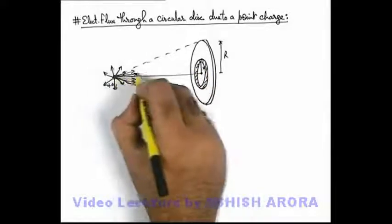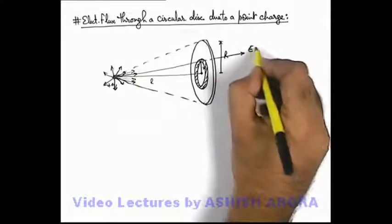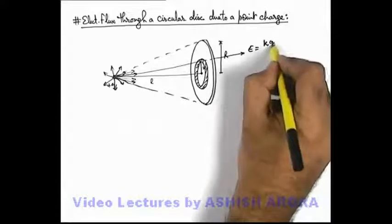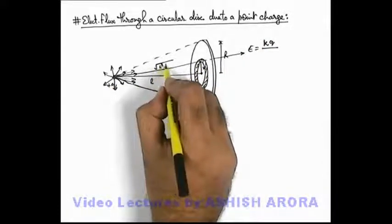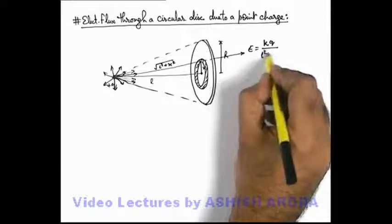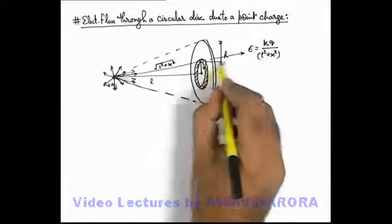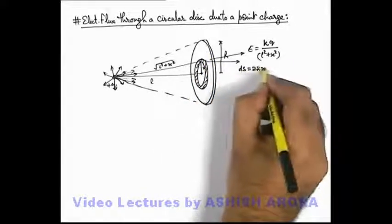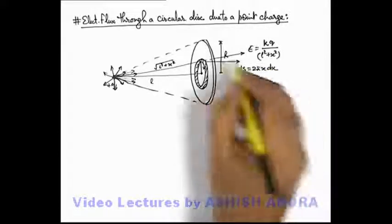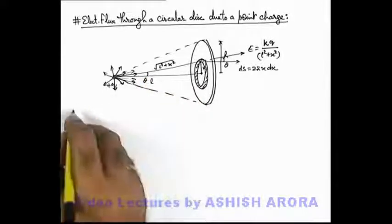So here at the location of this element the electric field will be in radially outward direction and the magnitude of electric field can be written as kq by l square plus x square. So here electric field will be kq by l square plus x square. And the surface area of this element will be in the direction normal to the disc.